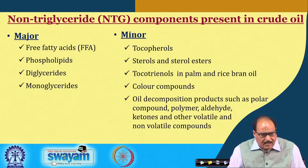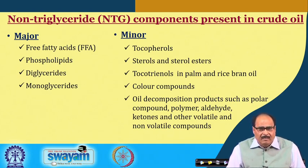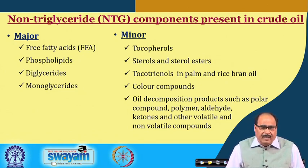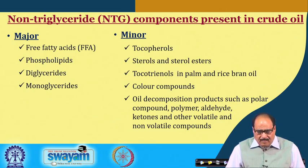The major non-triglyceride compounds present in the oil, depending upon the process and process parameters used for oil extraction, might include free fatty acids, phospholipids, diglycerides, monoglycerides and so on. Similarly, some of the minor non-triglyceride components which oil might contain include tocopherols, sterols and stenols or sterol esters, tocotrienols, color compounds, or even oil decomposition products such as polar compounds, polymeric aldehydes, ketones, and other volatile and non-volatile compounds.